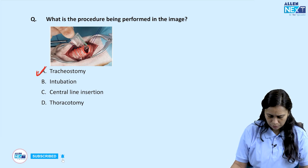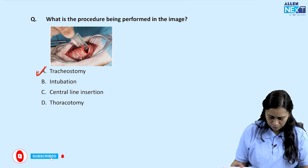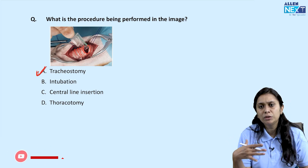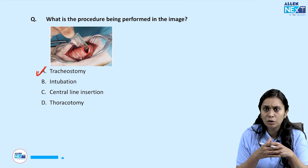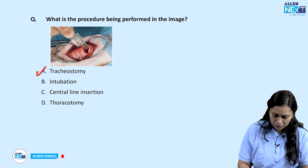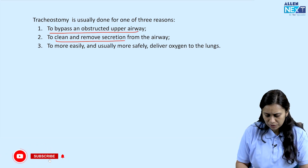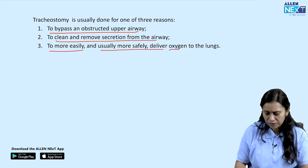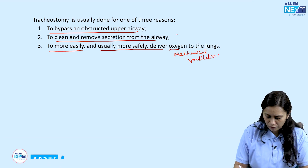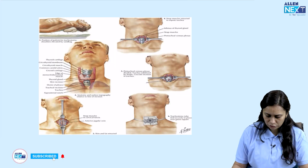Thoracotomy involves cutting the ribs to reach the lung for pneumonectomy, lobectomy, or thoracic surgeries — that is different. In this image, tracheal rings are visible and a tube is being inserted: tracheostomy. Indications for tracheostomy include: to bypass an obstructed upper airway, for pulmonary toileting to clean and remove secretions, and for safer delivery of oxygen during prolonged mechanical ventilation.